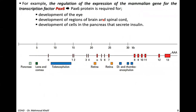Let's look at an example: the regulation of expression of the mammalian gene for the transcription factor PAX6. PAX6 is a protein required for the development of the eye, regions of the brain, the spinal cord, and cells in the pancreas that secrete insulin. This illustrates that the same gene exists in all our body cells but is expressed differently in different kinds of cells — it has a function in the eye, brain, spinal cord, and pancreas, and there is a different isoform expressed in different cell types.